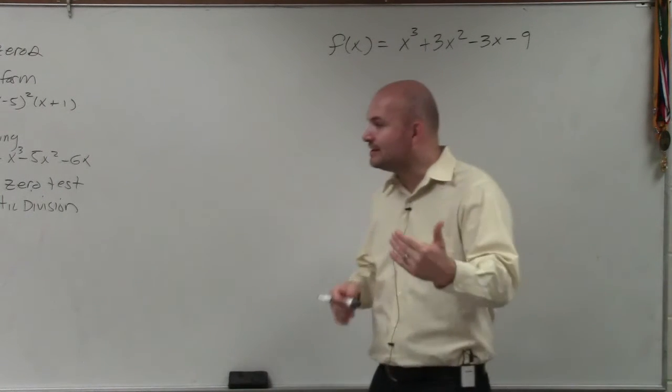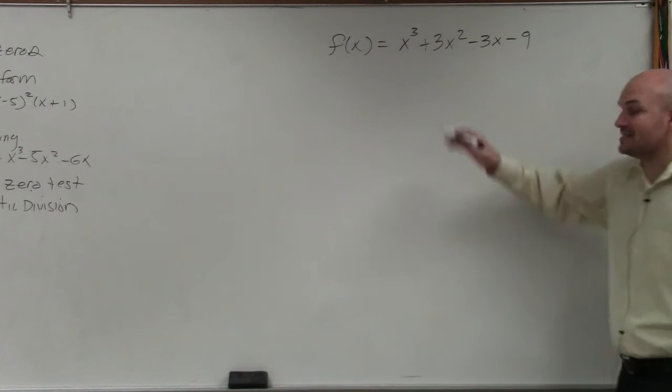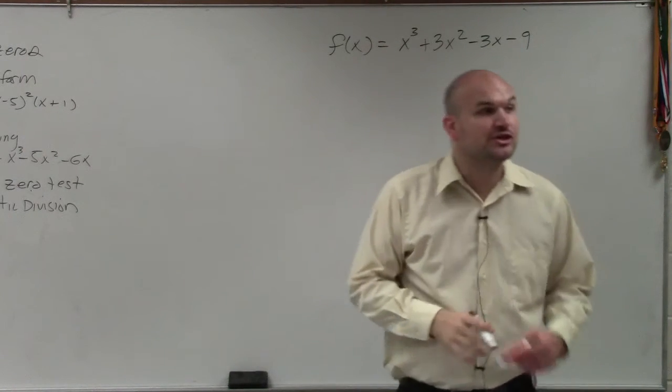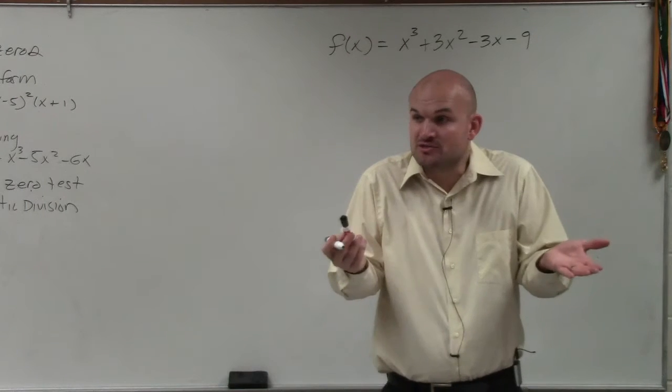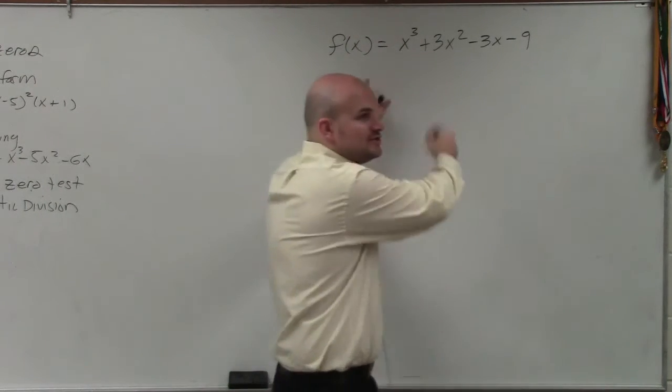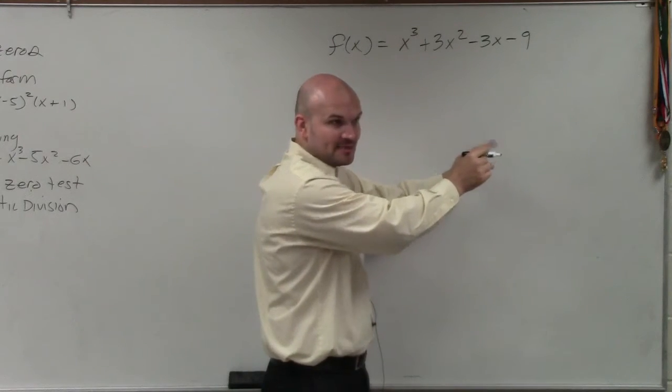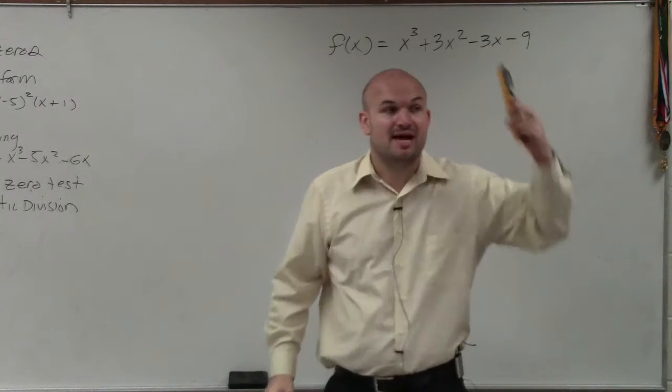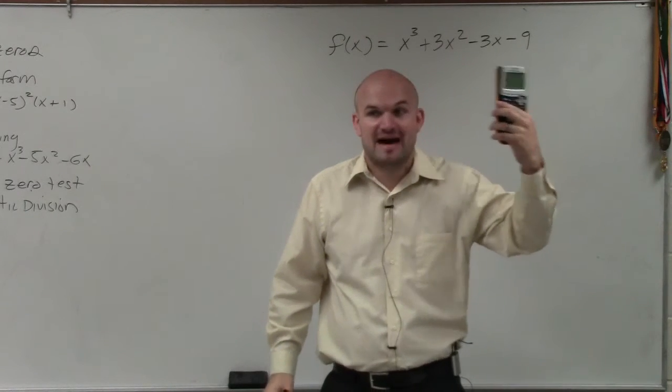So what would happen, let's say I want to find all the zeros. And let's pretend we could not factor this by grouping. One thing we need to do is find what are the zeros. Because if you remember, if we know what one zero is, we can do synthetic division. So all we got to do is start and find one zero. The best way to do that is to graph it and to find that zero.